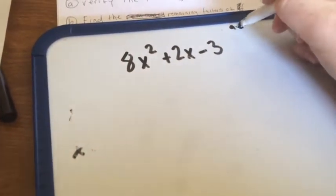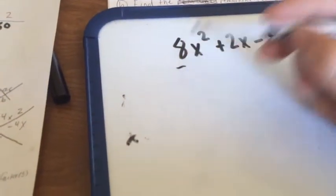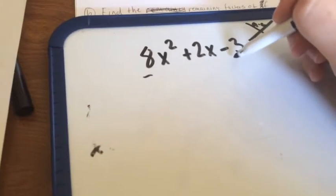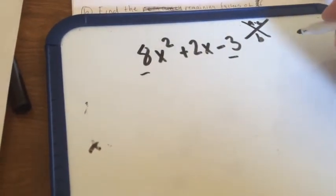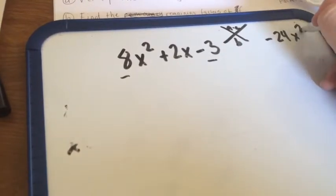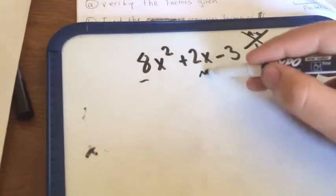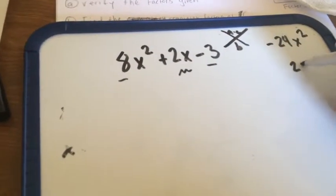We take our A term, which is 8, and multiply it by our C term. 8 times 3 is going to be negative 24x squared. Then, we leave our B term just like it is. It's 2x.